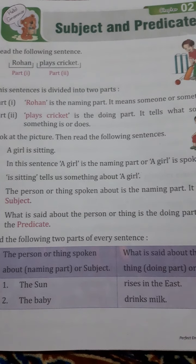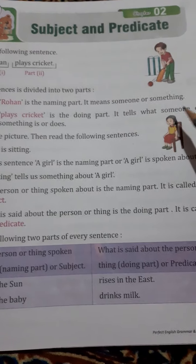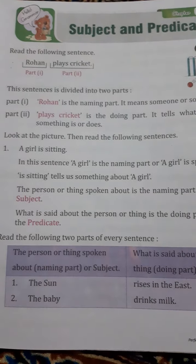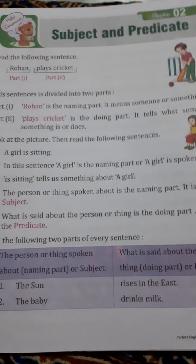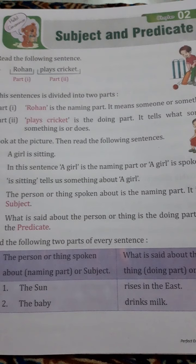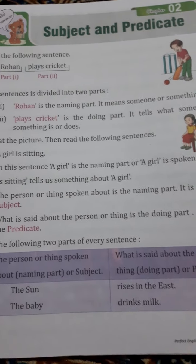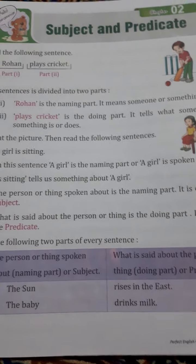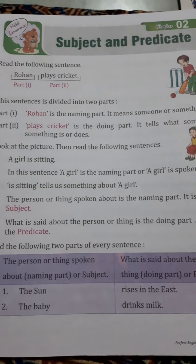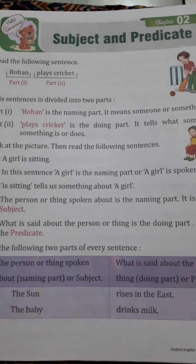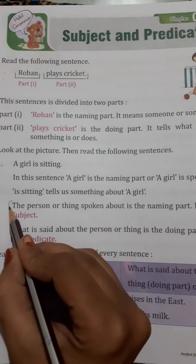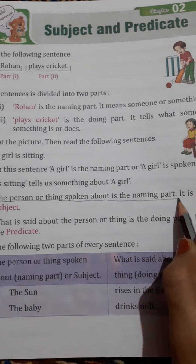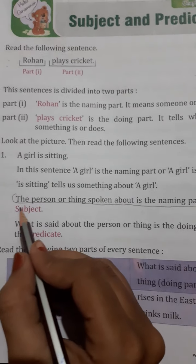Look at the picture, then read the following sentence. This girl is sitting. So the subject — the naming part — is 'a girl.' What the girl is doing is sitting. It tells us something about the girl. The person or thing that is spoken about is the naming part, and it is called the subject.